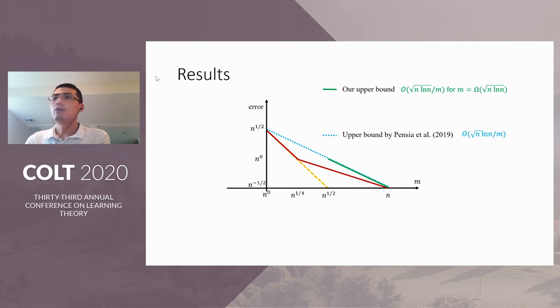Our upper bound only improves over the existing result by a factor of square root log N. However, our upper bound is achieved by a very simple and natural algorithm based on heuristics frequently used in practice, and we'll talk about intuition of the algorithm later on.